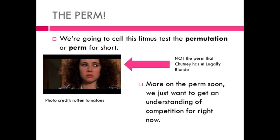Let's talk about the permutation quickly. We call this litmus test — to see whether it's a good idea to do both the plan and the counter plan together — the permutation, or the perm. It's not the perm that Chutney has in Legally Blonde; it's not a curly hairstyle. It is the litmus test to see whether you can do the plan and the counter plan at the same time. We'll talk about the perm more in part three, detailing affirmative answers to the counter plan.